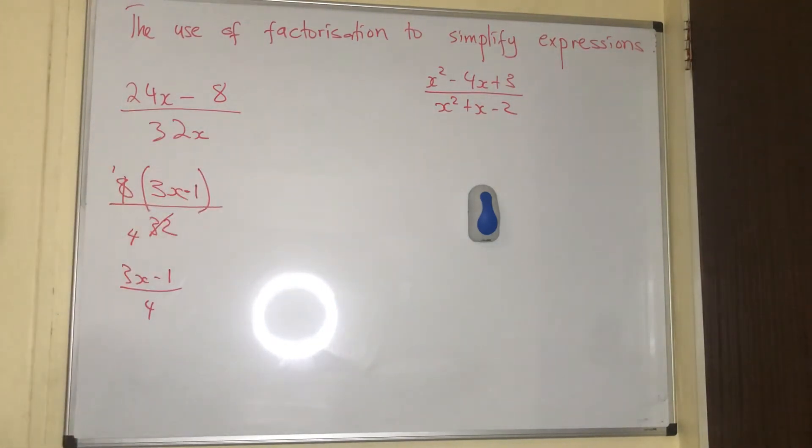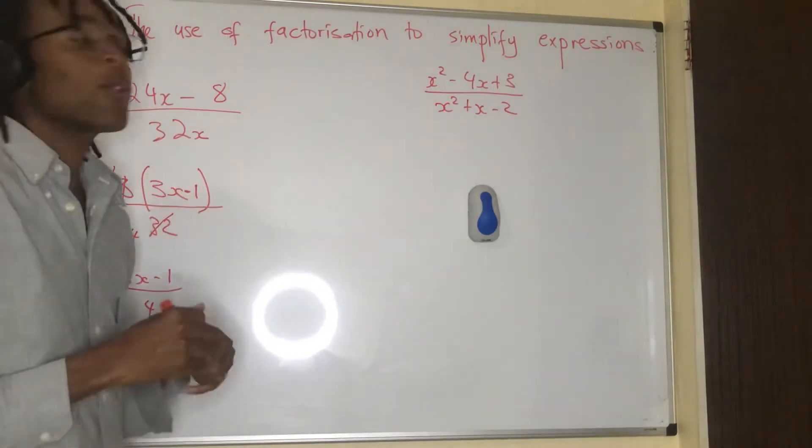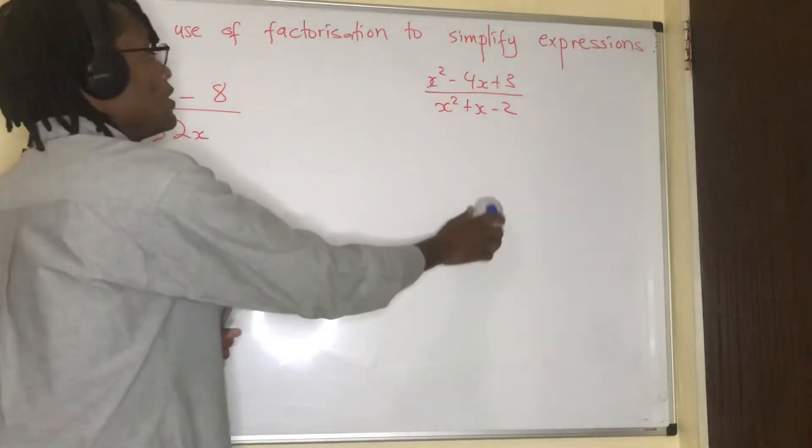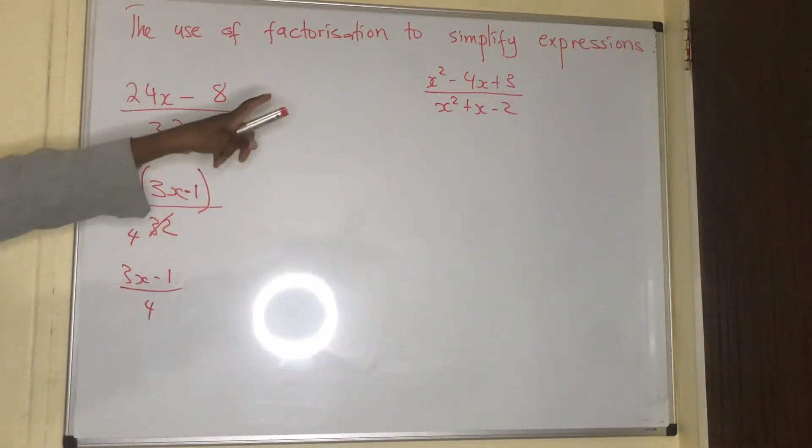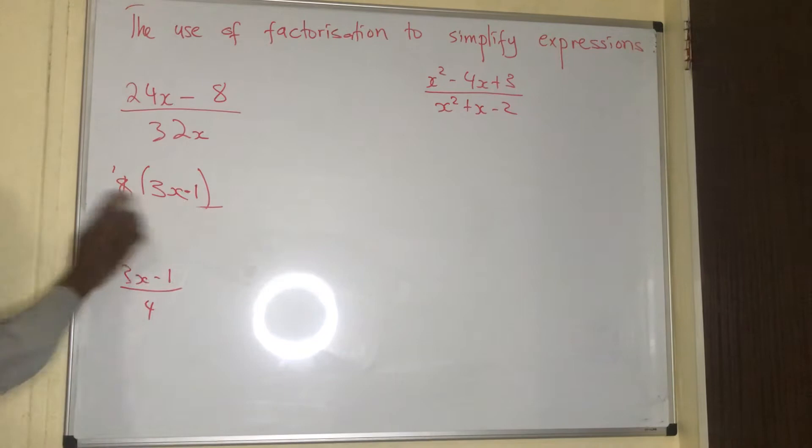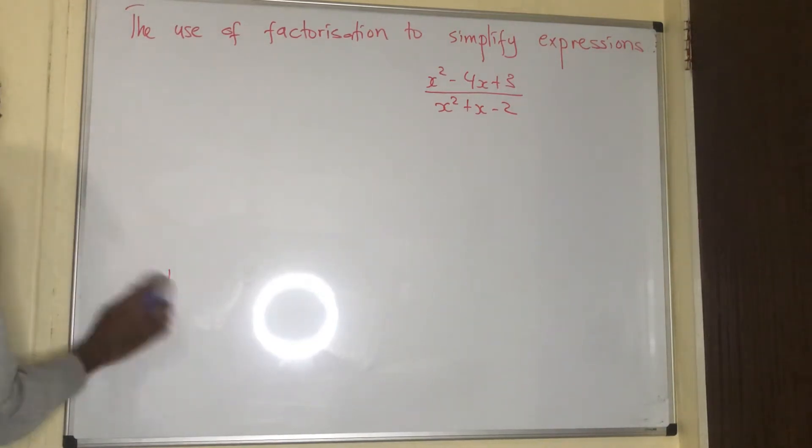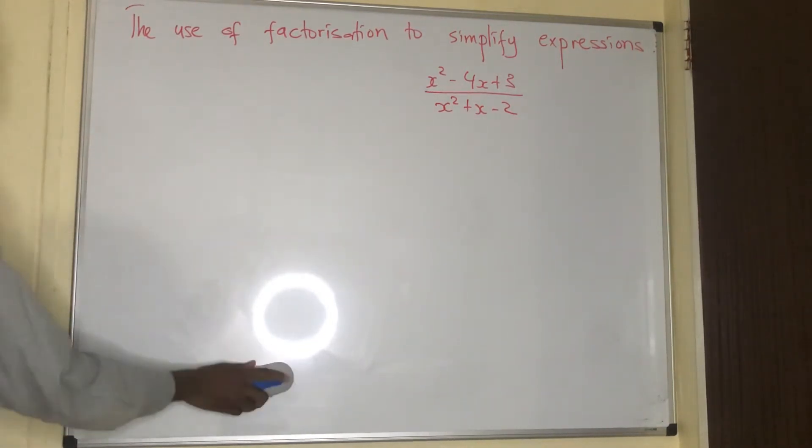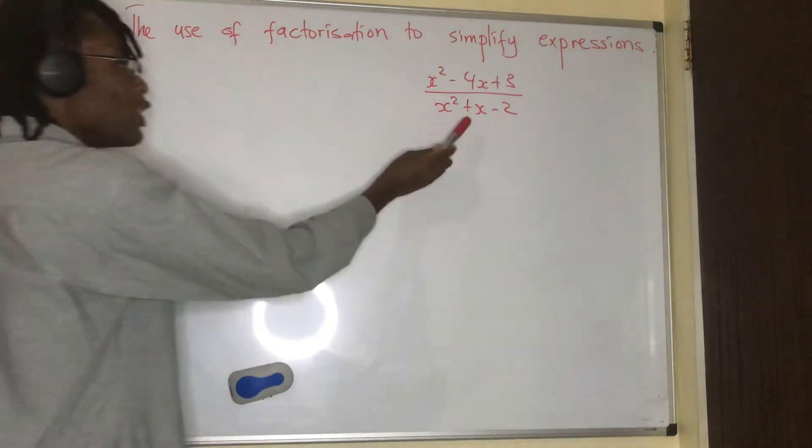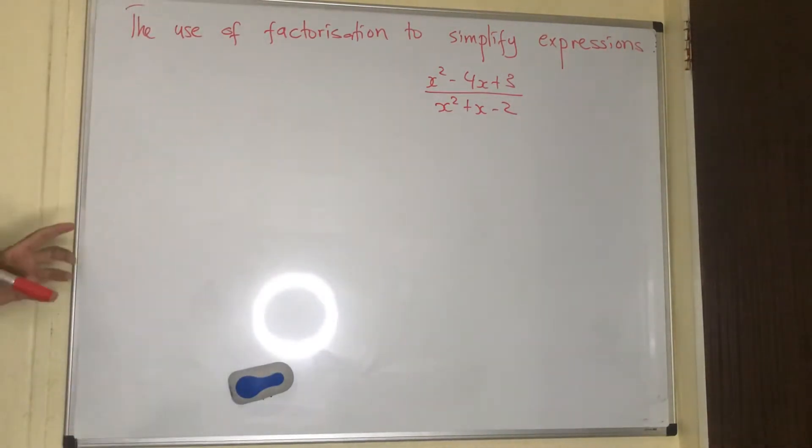Here, what we are going to do is we are going to factorize this expression on top, and then we factorize this expression here. Then after that, we cancel the things that go in hand.